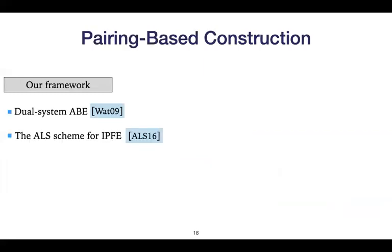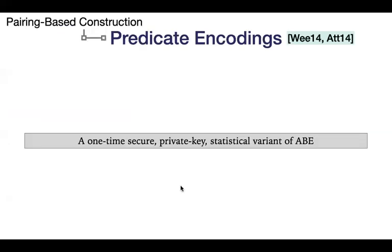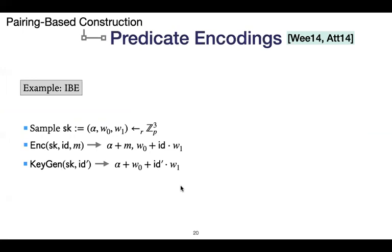So let's look at ideas on how to solve this. Our pairing-based construction uses the following building blocks: the dual system ABE of Waters, and the ALS scheme for inner product functional encryption from LS16. We need an additional technical tool, which is predicate encodings — this can be seen as a one-time secure, private key, statistical variant of ABE.